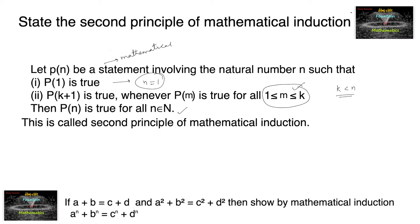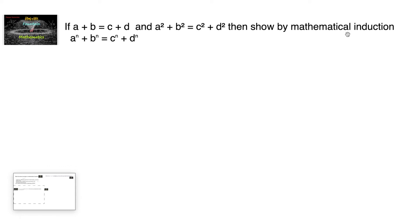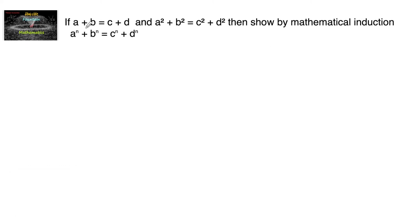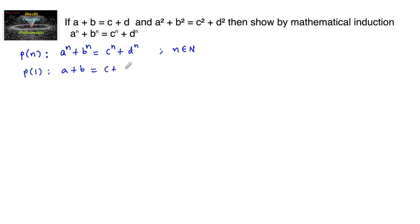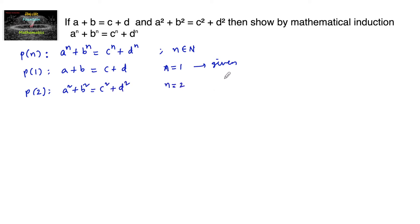Let us see this by taking an example. If a + b = c + d and a² + b² = c² + d², then show by mathematical induction that aⁿ + bⁿ = cⁿ + dⁿ. Let P(n) be the statement aⁿ + bⁿ = cⁿ + dⁿ where n is a natural number. It is given that a + b = c + d, so P(1) is true, and a² + b² = c² + d², so P(2) is also true.